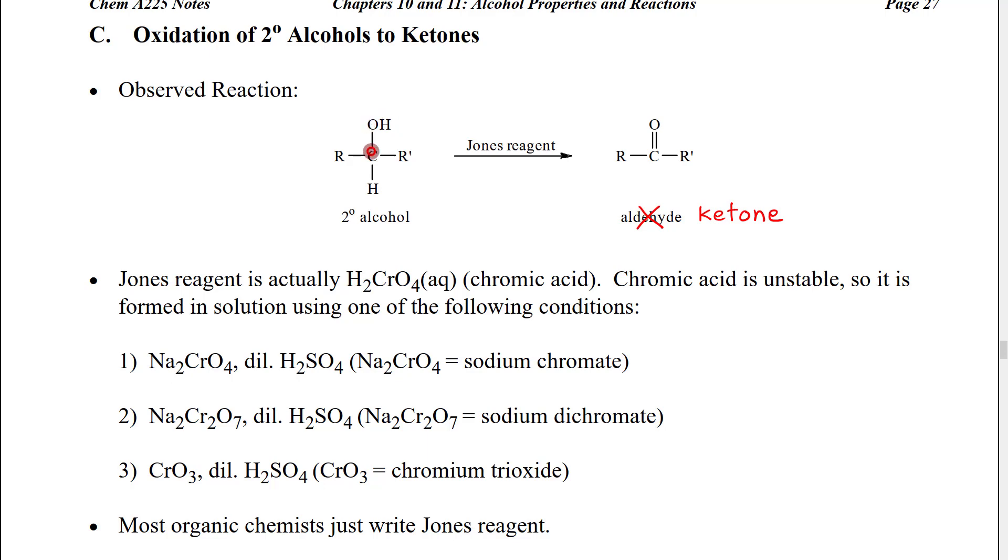A secondary alcohol is also going to have a hydrogen directly attached to that alcohol and that is important because we need to have a hydrogen because in order to do this reaction we are going to be removing a hydrogen from this central carbon.